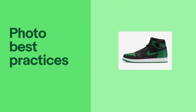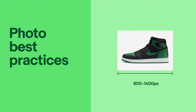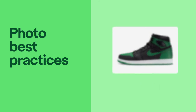And finally, the size and quality of your photos is very important. Aim for images between 800 to 1400 pixels on the longest side. This reduces load time and enables the zoom feature on your listing. We do not recommend stretching a smaller image to fit the requirements, as it will make the image blurry.